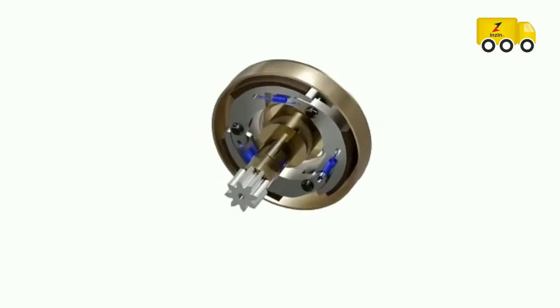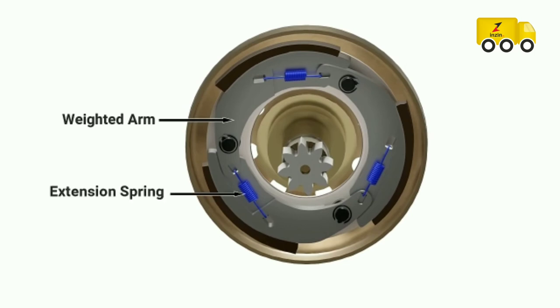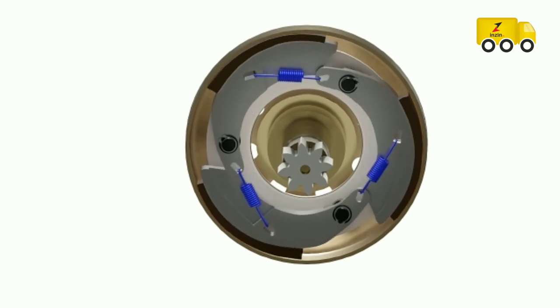This transmission system includes a centrifugal clutch assembly. The inner portion consists of weighted arms held in place by extension springs. These arms are connected to the pulley. The clutch housing is connected to the output gear. When sufficient speed is reached, the centrifugal force causes the arms to swing outward, and the friction pads engage with the clutch housing.